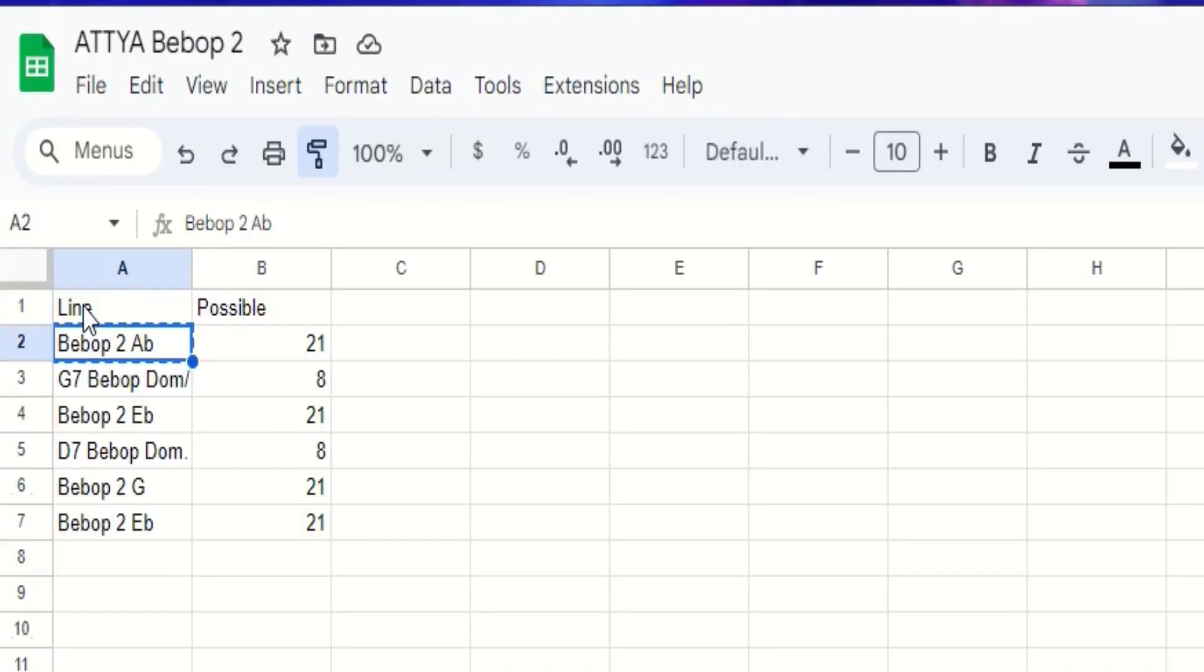Okay, to track our progress here, we are describing the kind of line we're going to play, or what we're going to play over, and then here we have the number of possible notes that we can hopefully get right in each one.